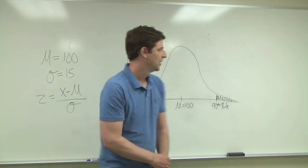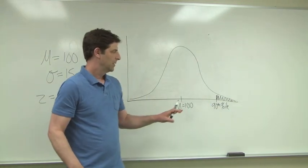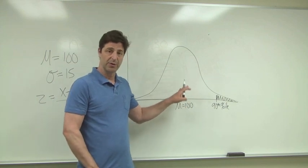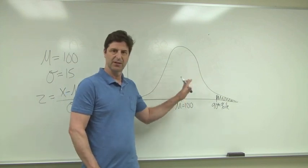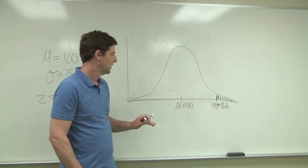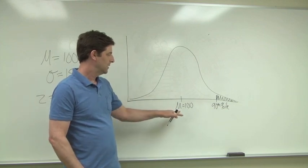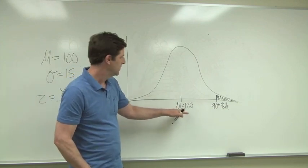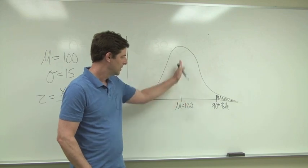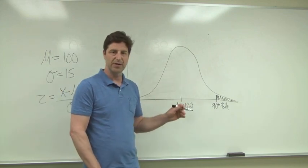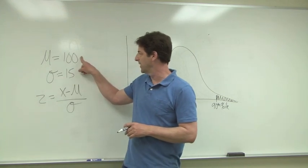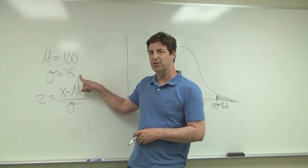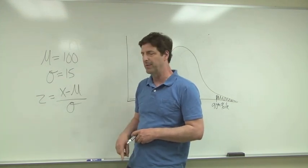So here's how it works. Suppose that this is the normal distribution, just pretend that's a decent drawing of a normal distribution. And in the normal distribution, the mean is in the middle, and let's say we're dealing with IQ test scores that has a mean of 100 and a standard deviation of 15 in the population.